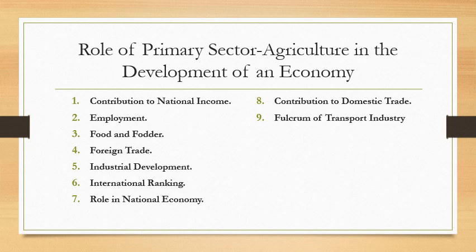3. Food and Fodder. In India, agriculture meets almost the entire food requirements of the people. A large proportion of income is spent on food. The agriculture sector provides fodder to about 38 crores of animals.